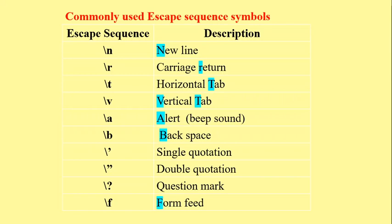Backslash with a single quotation mark, also known as apostrophe, is used for punctuation marks — along with double quotation and question mark. These three are used when writing sentences that require such symbols. Backslash f means form feed, generally used with printing. Normally we don't use backslash f, but when using a printer, we use it.